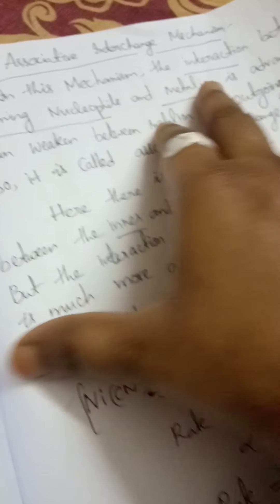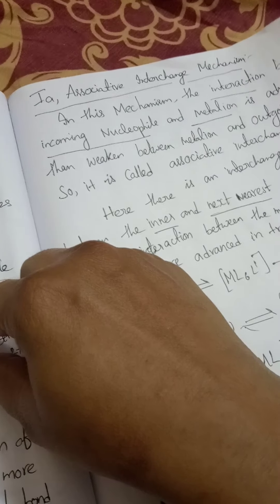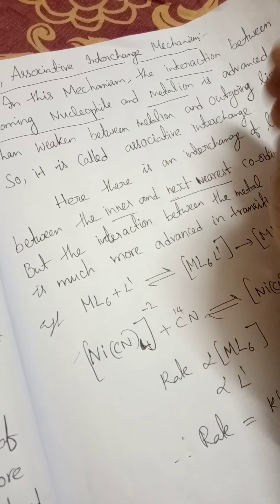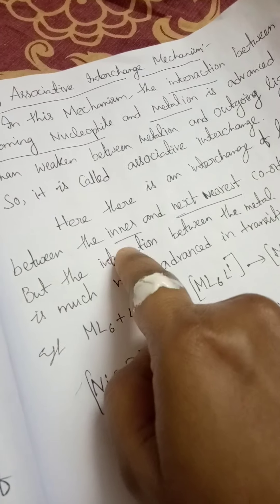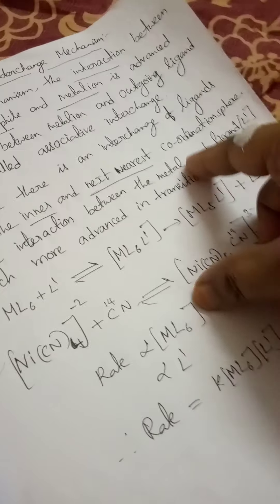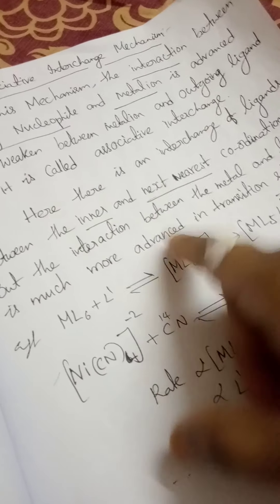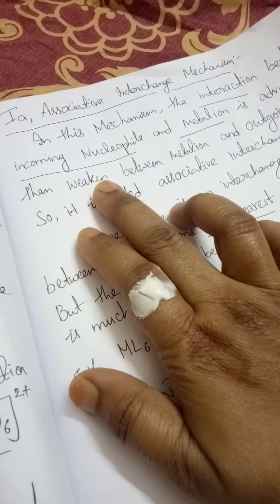In the last class we discussed SN1 reactions. Nucleophilic substitution reactions are of two types: SN1 and SN2. Langford and Gary gave four different mechanisms: A (association), D (dissociation), IA (interchange association), and ID (interchange dissociation). SN1 is followed by dissociation mechanism, whereas SN2 is followed by association mechanism and interchange association and interchange dissociation mechanisms.